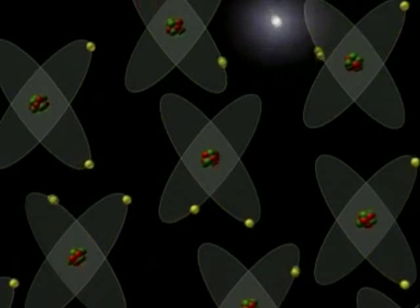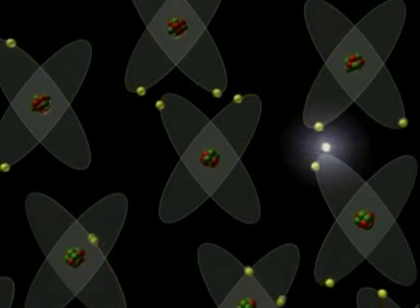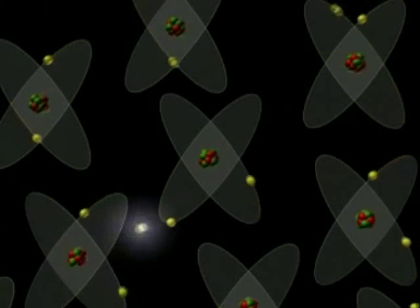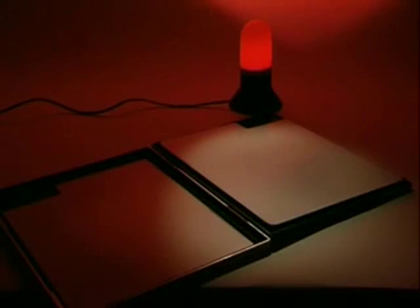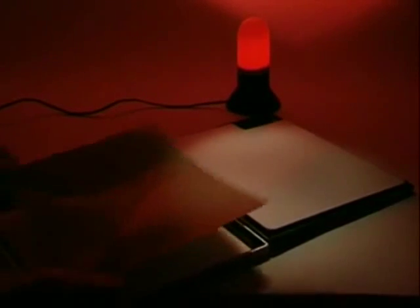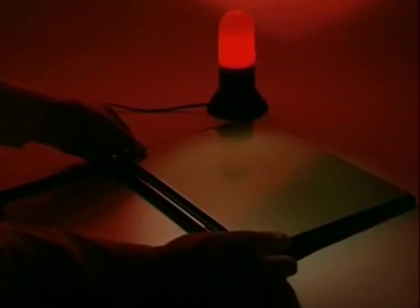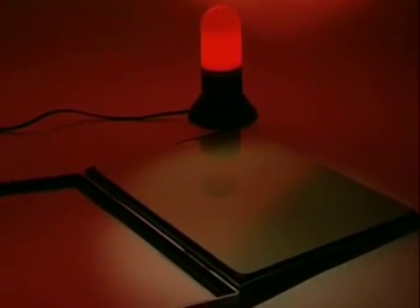But because we can't see nuclear radiation, it was only discovered just over 100 years ago. A French scientist called Henri Becquerel accidentally found out that the invisible radiation from a rock affected a photographic plate.